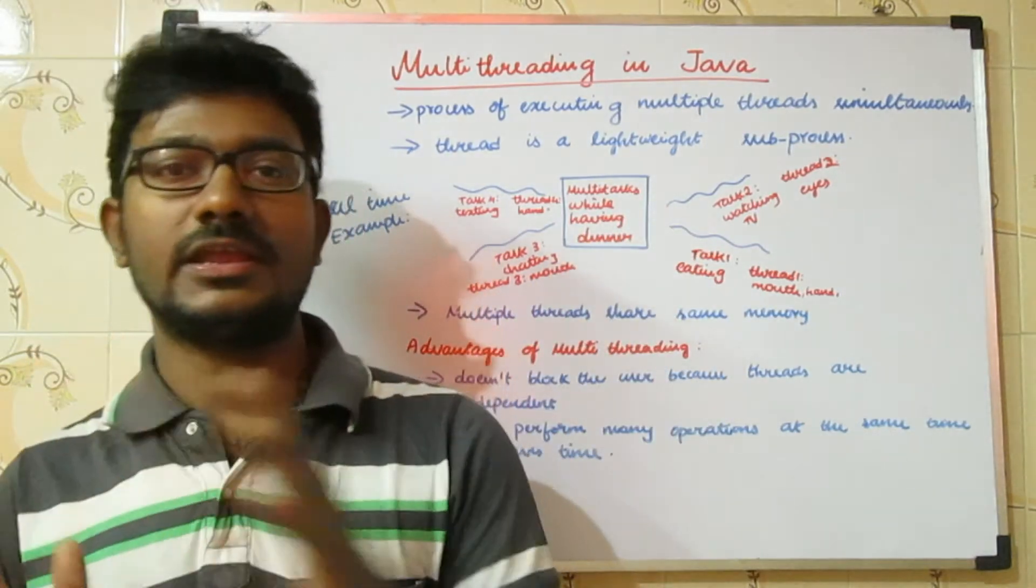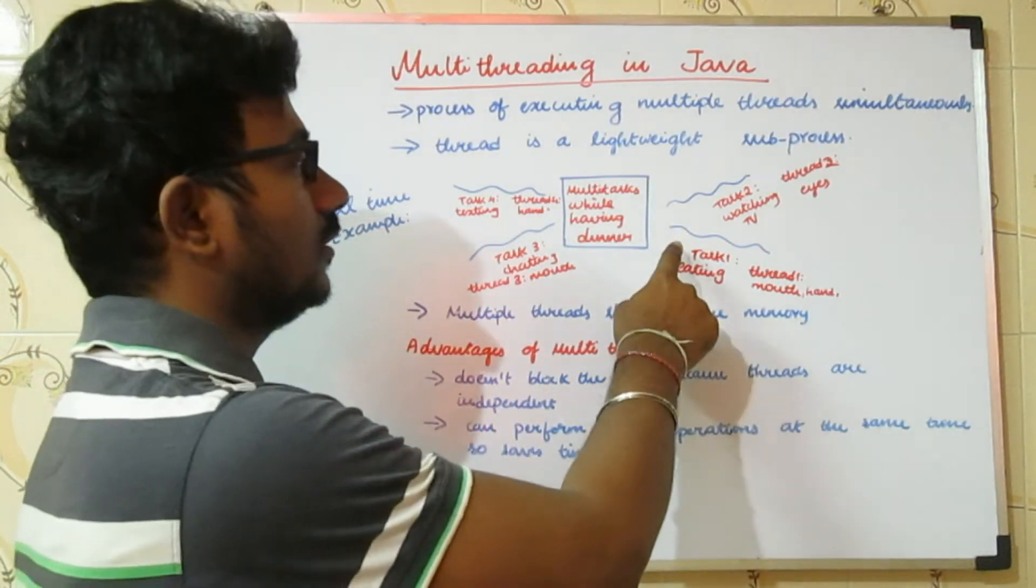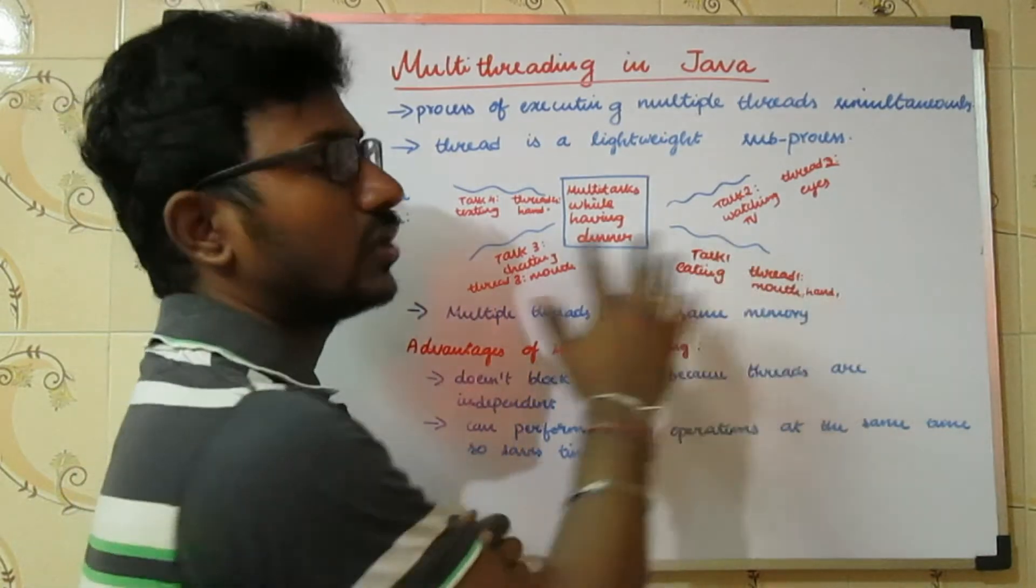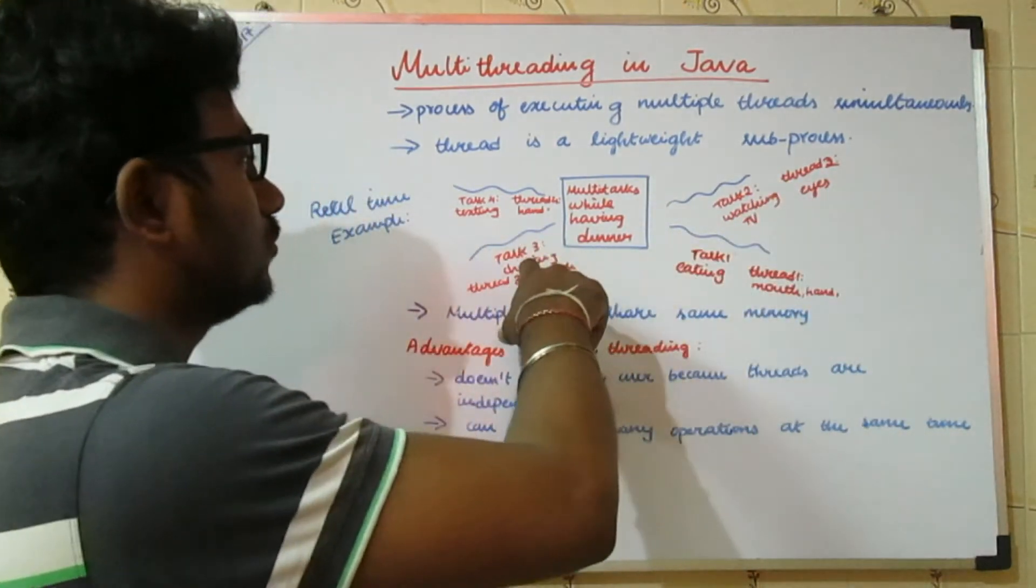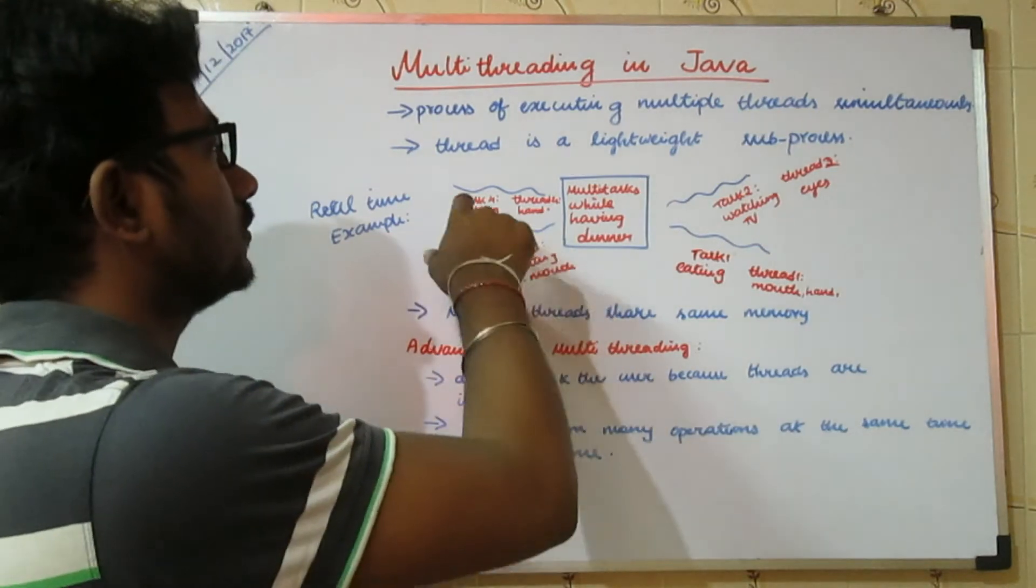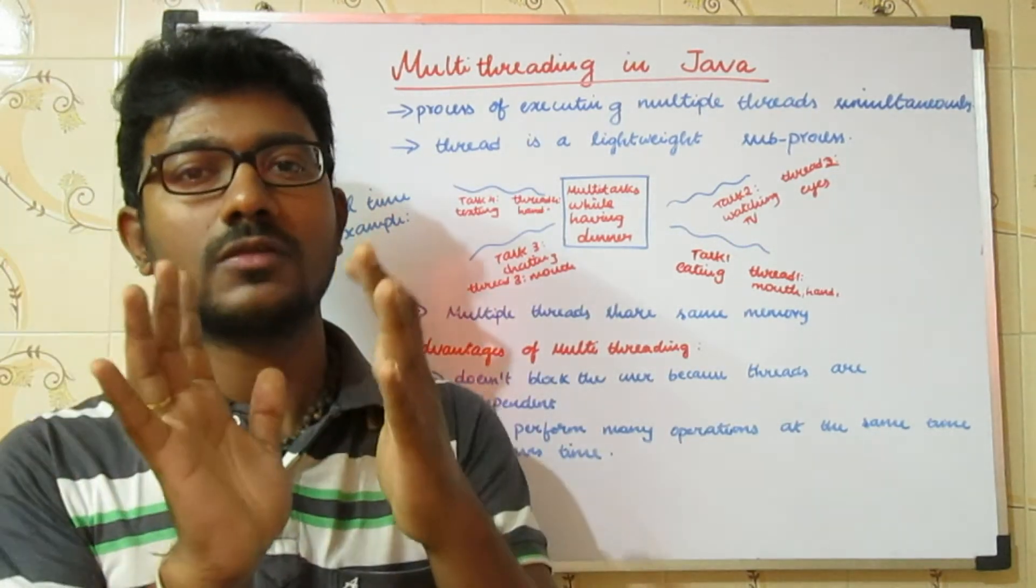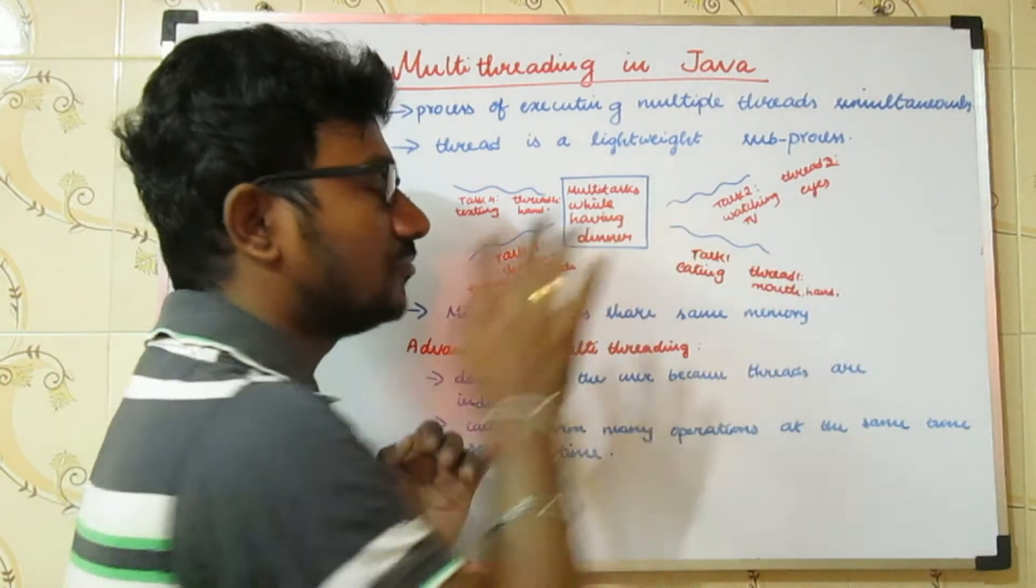Here, we are doing multiple tasks simultaneously using different parameters. For example, to execute eating, we need two things: mouth and hand. To watch TV, we need eyes. To chat, we need mouth. To text, we need hand. Each operation or task is executed by something - that something is called a thread.